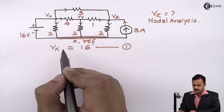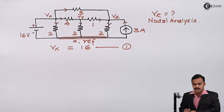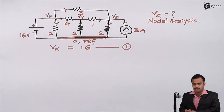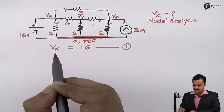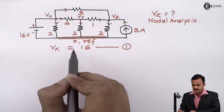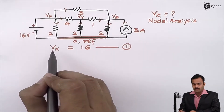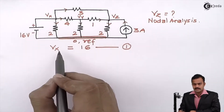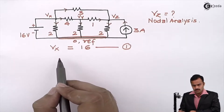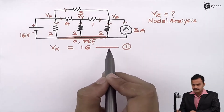Because when we solve the numerical, in the end I should get the Vx value the same as 16, so that I can say whatever method or direction I have used while solving the problem is correct. For verification purposes, do not consider this as a variable; consider this as an equation where the coefficient of Vx is 1, the coefficient of Vy is 0, the coefficient of Vz is also 0, and the constant is 16.